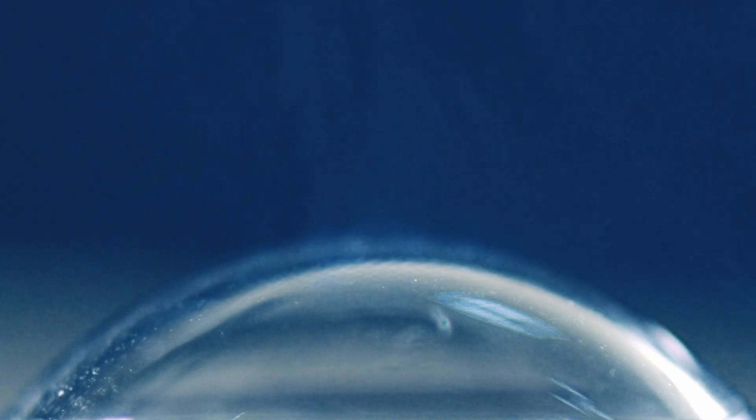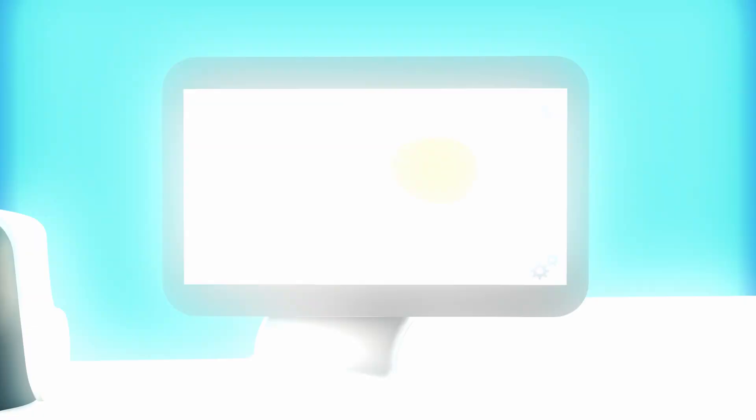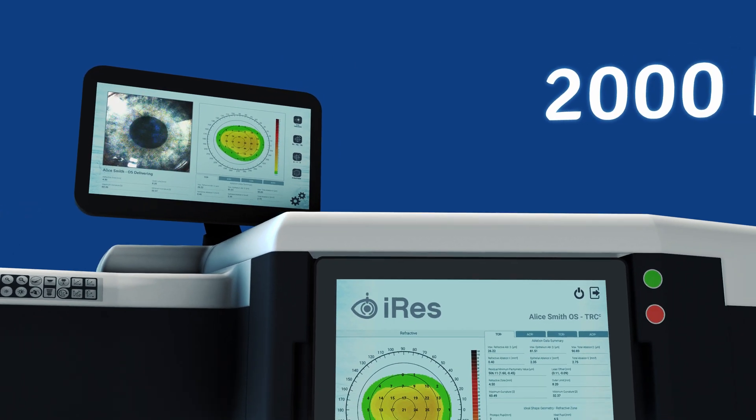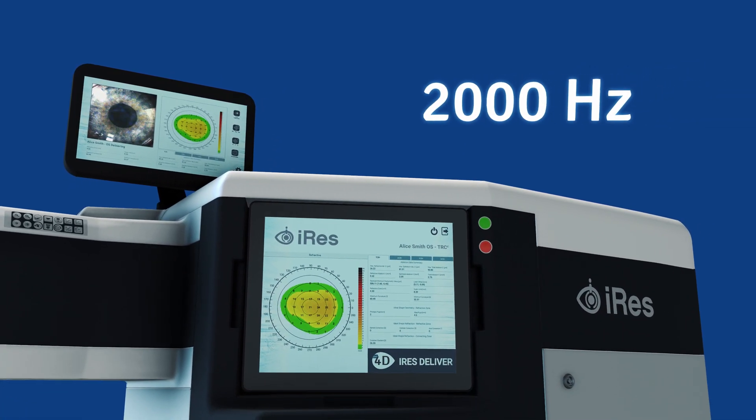IRIS 2 is the fastest market available Excimer laser which, employing the IVIS double beam patent technology, allows it to reach a frequency of 2,000 Hertz.